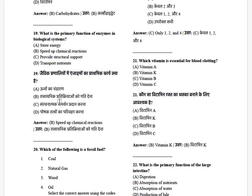What is the primary function of enzymes in a biological system? The options are: store energy, speed up chemical reactions, provide structural support, and transport nutrients. The answer is speed up chemical reactions.